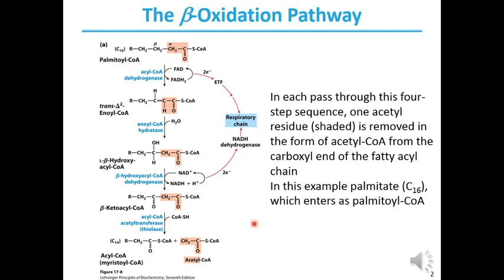Shown here is one pass. There are seven passes in the conversion of palmitoyl-CoA into eight different acetyl-CoA molecules. So, how is this process done? What are the roles of these enzymes, and what is the chemical mechanism involved in this process?